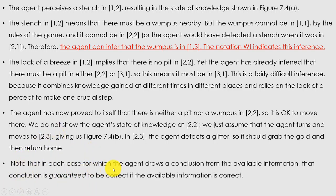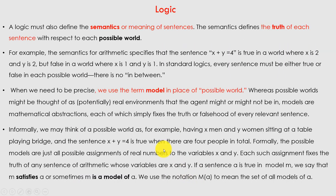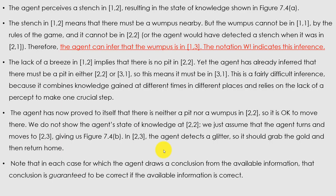Note that in each case, the conclusion the agent draws from available information is guaranteed to be correct if the available information is correct. This was all about the knowledge-based agent. Knowledge-based agents are those agents where a history of knowledge is already available, and based on this knowledge, the agent draws conclusions. The Wumpus world example is a game where the agent takes the gold while avoiding the Wumpus — entering the Wumpus room means failing the game; retrieving the gold means success.